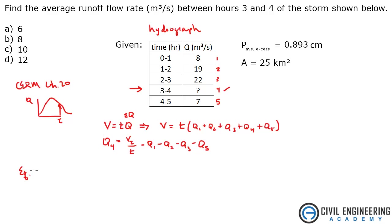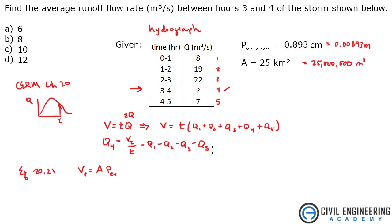The next thing we need to do is use equation 20.21 in the Civil Engineering Reference Manual, which states that our total volume equals the area times the excess precipitation. We were just given all that. Let's convert everything to meters for consistent units. So that's 0.00893 meters. And the area in kilometers squared is 25 million meters squared. So plugging that in: 25 million meters squared times 0.00893 meters gives a total volume of 2.2325 times 10 to the 5th meters cubed.